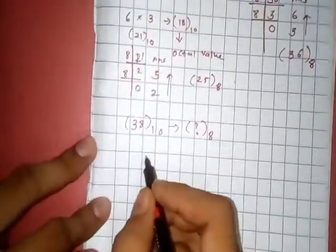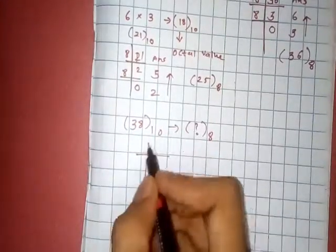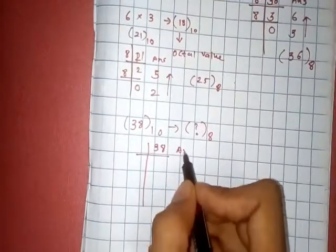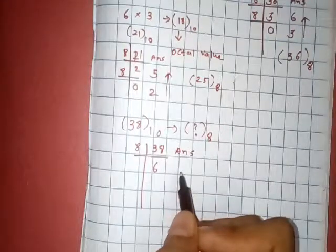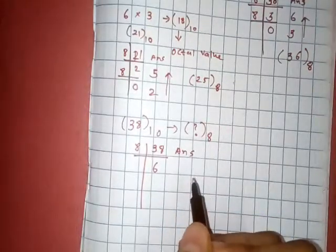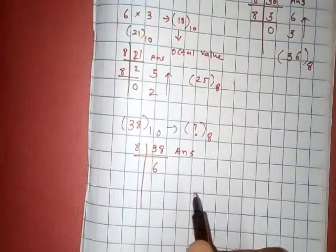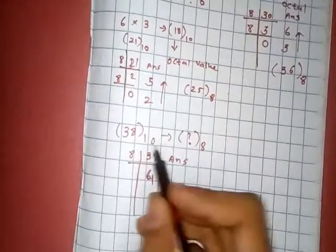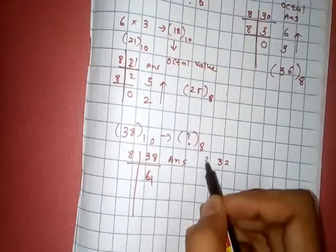So now we must convert 38 that is in decimal into an octal value. Same we use this concept for the conversion of decimal to octal. 38 divided by 8, 8 fours are 32.